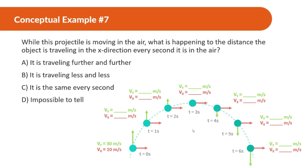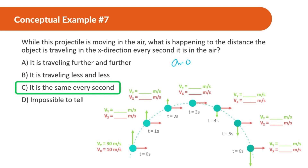While this projectile is moving in the air, what is happening to the distance the object travels in the X direction every second? It is the same every second. We know that because the acceleration in X is zero — it's not slowing down or speeding up. If it has the same speed every second, it's going to be moving the same amount in the X direction every second.